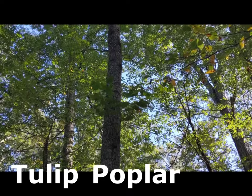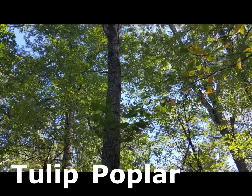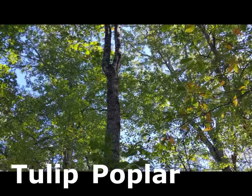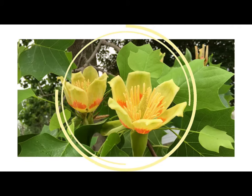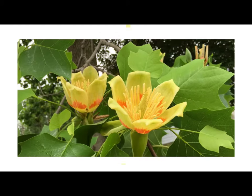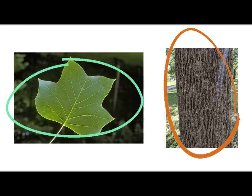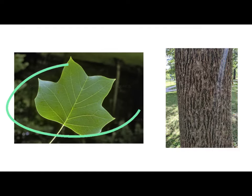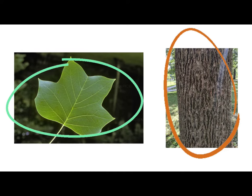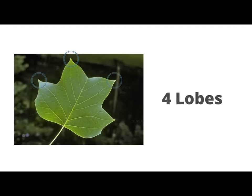Next is Kentucky's state tree, the tulip poplar. Tulip poplar trees are usually identified by their greenish yellow and orange striped tulip-like flowers that grow on the tree. Some other defining characteristics include their tall size, the unique leaf shape, and its high canopy. The leaves have four lobes.